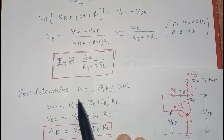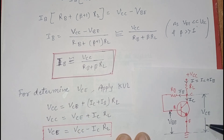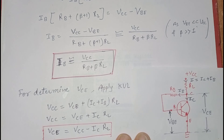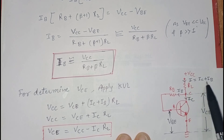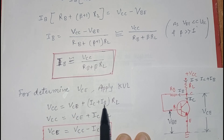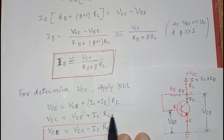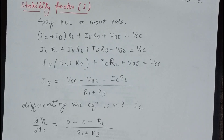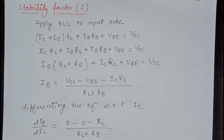To determine VCE, we apply KVL to the output side: VCC = (IC + IB)·RL + VCE. Since IB is much less than IC, we neglect IB. After rearranging, VCE = VCC − IC·RL. This is the equation to find VCE.